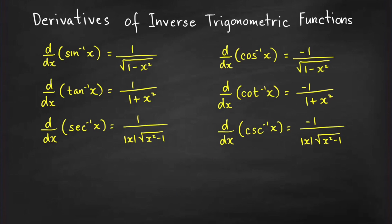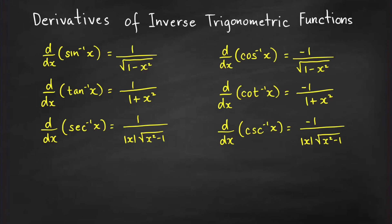Now for derivatives of inverse trigonometric functions — it's enough to remember three of them. Just keep in mind that if you have the 'co' version (cosine inverse, cotangent inverse, cosecant inverse), simply take the negative of the corresponding derivative: negative of sine inverse's derivative, negative of tangent inverse's derivative, and negative of secant inverse's derivative.